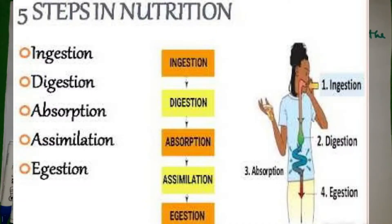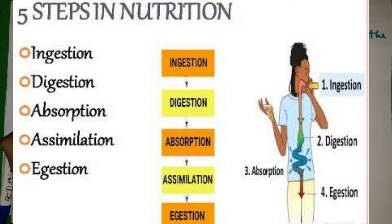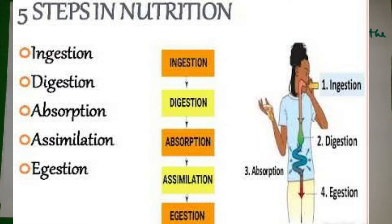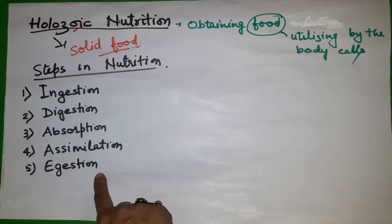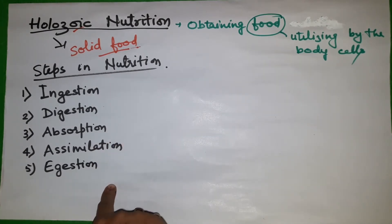Now, what are the steps in nutrition? Basically, there are five steps. The first one is ingestion, the second is digestion, the third is absorption, the fourth is assimilation, and the fifth one is egestion. Together, these are the steps in nutrition.